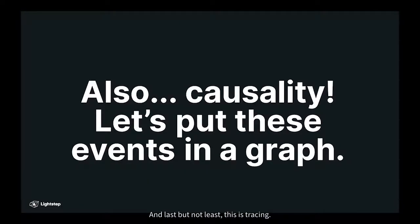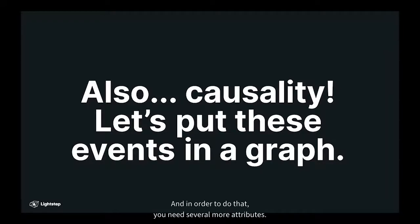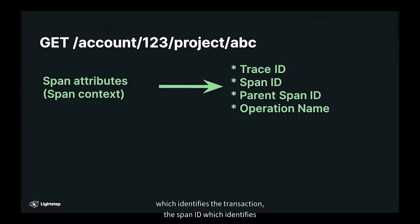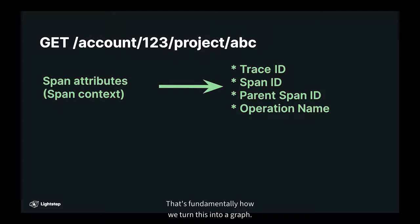And last but not least, since this is tracing, we want to take all of these events and put them into a graph. In order to do that, you need several more attributes: the trace ID, which identifies the transaction; the span ID, which identifies the operation; the parent span ID, which gives us causality — that's fundamentally how we turn this into a graph. Finally, the operation function name so that we can compare across different runs of the same operation.